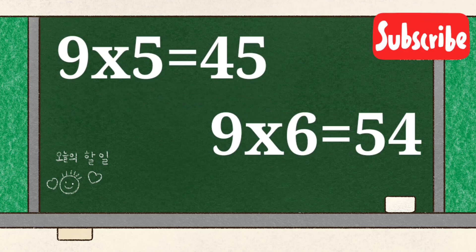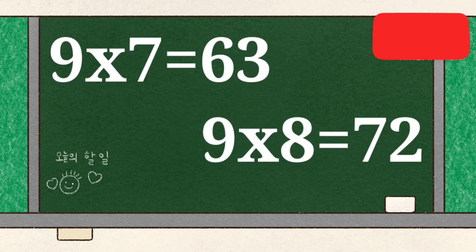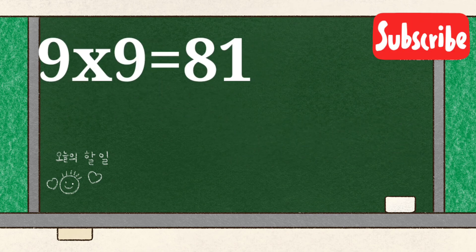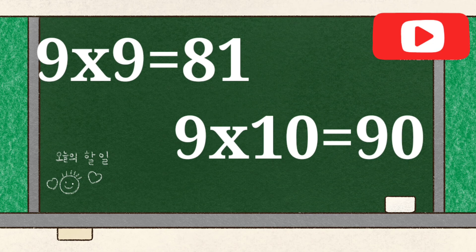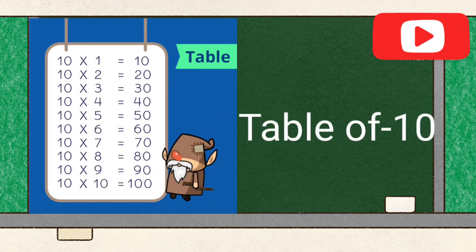9 6's are 54, 9 7's are 63, 9 8's are 72, 9 9's are 81, 9 10's are 90. Table of 10.